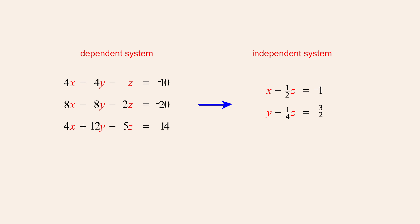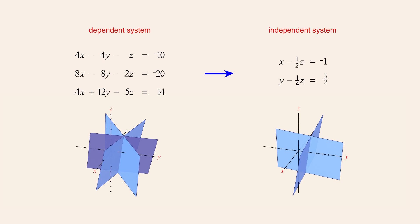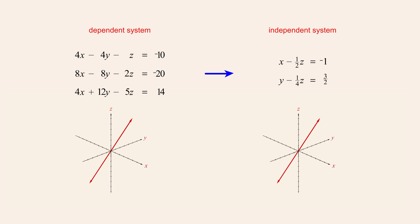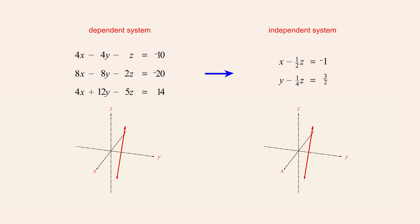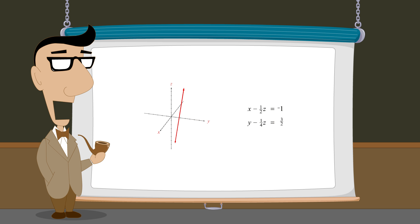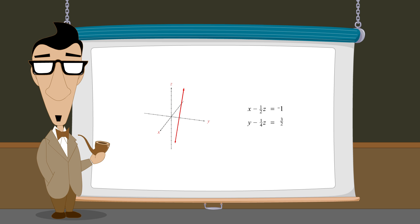Although the planes corresponding to this new system are different than the original planes, their intersection line which represents the solution set of the system is the same. This infinite solution set can now be written in parametric form as we will see after the next lecture. And Gauss-Jordan elimination has produced simpler equations which makes the process of creating this parametric representation much easier.